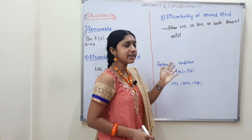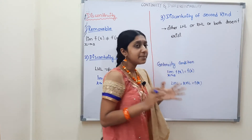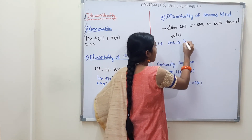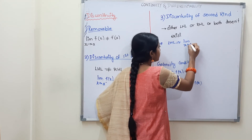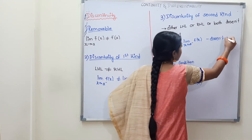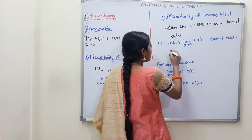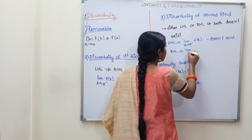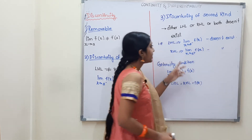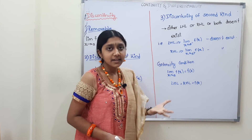Discontinuity of second kind: either LHL or RHL or both don't exist. That means the limit of x tends to a minus f(x) doesn't exist, or the limit of x tends to a plus f(x) doesn't exist, or both don't exist.